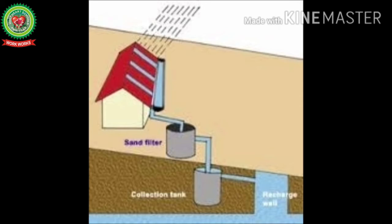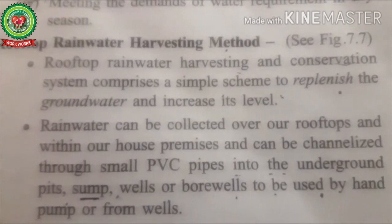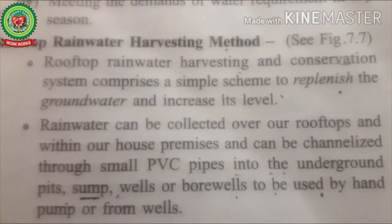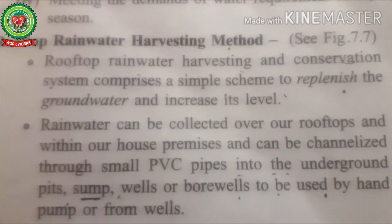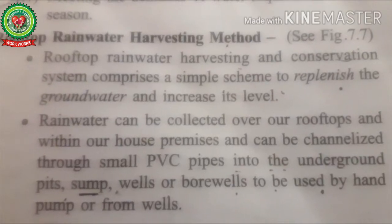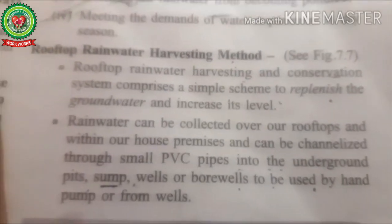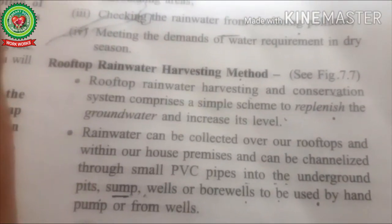This is the most important method to conserve rainwater and replenish groundwater. Rooftop rainwater harvesting and conservation system comprises a simple scheme to replenish — meaning to fill up again — the groundwater and increase its level. Rainwater can be collected over rooftops within house premises and channelized through small PVC pipes into ground pits, sumps — a pit or hollow in which liquid is collected — and bore wells, which are deep drilled wells accessed by hand pump.